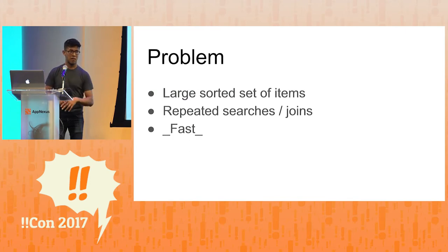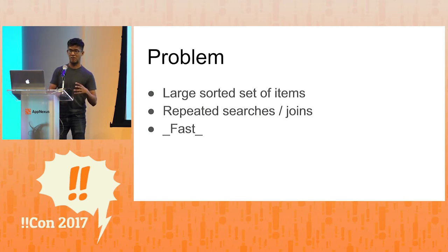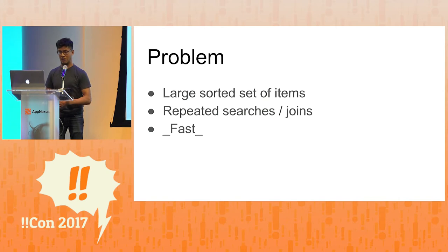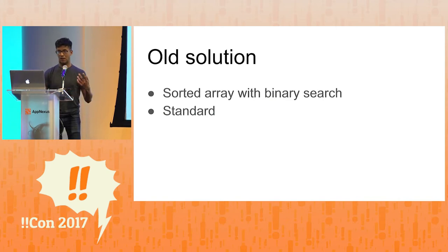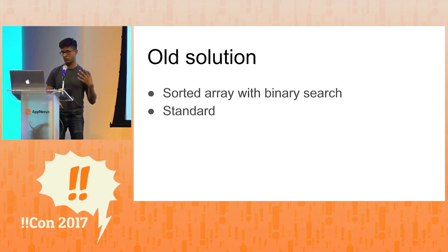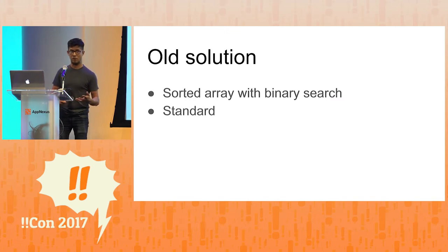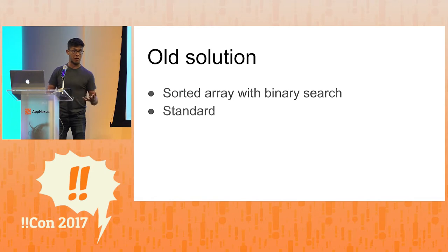What's the problem? It's a problem that I think many people or many companies have. You have a large static set of items that's huge and it's sorted, and you want to do many searches on it. And obviously, you want to do it fast. What was our old solution? A pretty standard thing: a sorted array with binary search. This is an approach that many people know and understand and love. But can we do better?